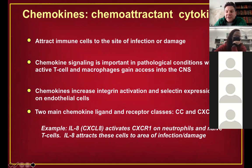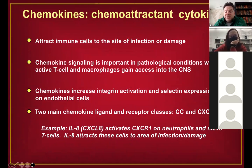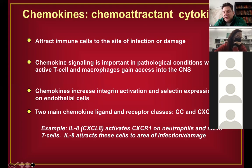Chemokines help bring in monocytes, neutrophils, and T cells into the brain or spinal cord. For recruitment you also need to slow down immune cells, since they're flowing through the blood. That's where integrins and selectins come in at the blood-brain barrier endothelial cells. Chemokines also enhance or increase the expression of integrins and selectins.